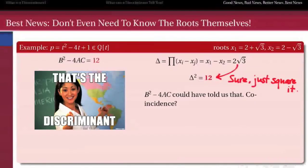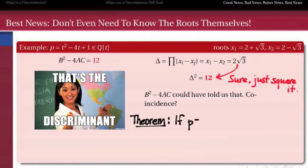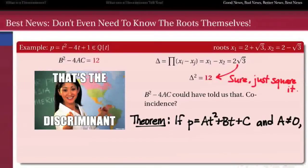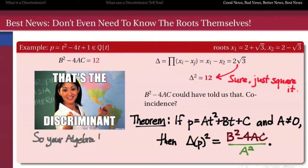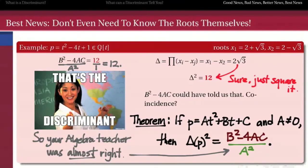So what your high school teacher told you was the discriminant was really the square of what we think of as the discriminant. The theorem is that for any quadratic polynomial at squared plus bt plus c, the square of its discriminant is b squared minus 4ac. Well, almost. Here's a little white lie your high school teacher told you: if the leading coefficient a is not zero, we also need to divide by a squared. So the actual square of the discriminant is b squared minus 4ac, all divided by a squared. Your algebra teacher was almost right — dividing by a squared brings us into agreement.